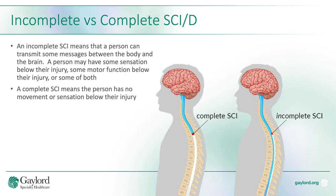Spinal cord injuries can either be considered incomplete or complete. If you have an incomplete spinal cord injury, it means that you have some messages making it from the brain to the body or from the body to the brain past the injury. This generally means you can have some sensation, some movement, or some of both below your level of injury. If you have a complete spinal cord injury, this means that you have no movement or sensation below your level of injury.